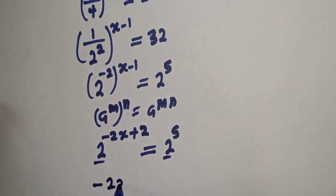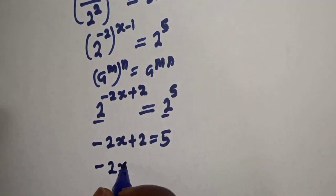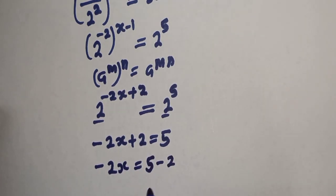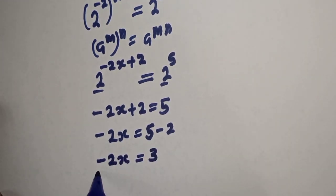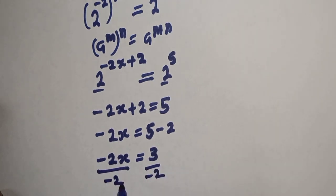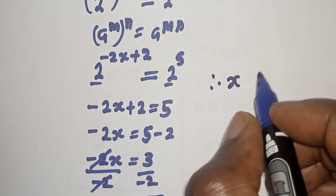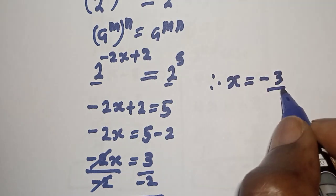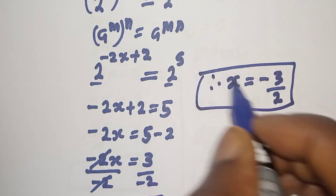Since the bases are equal, minus 2s plus 2 equals 5. Subtracting 2 from both sides: minus 2s equals 3. Dividing both sides by minus 2, s is equal to minus 3 over 2. This is the final answer.